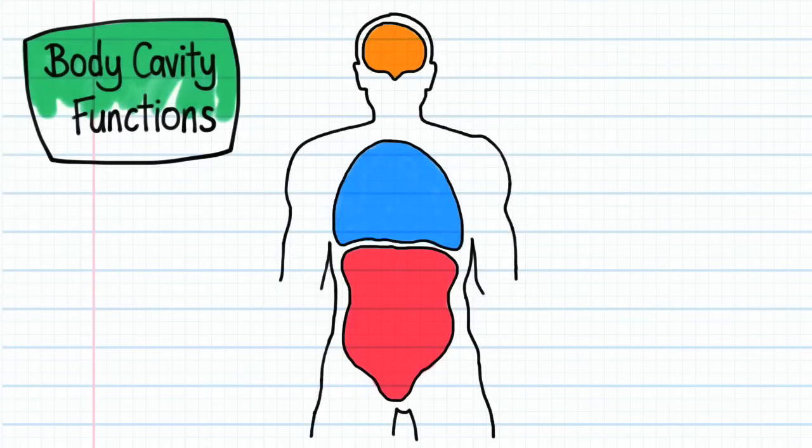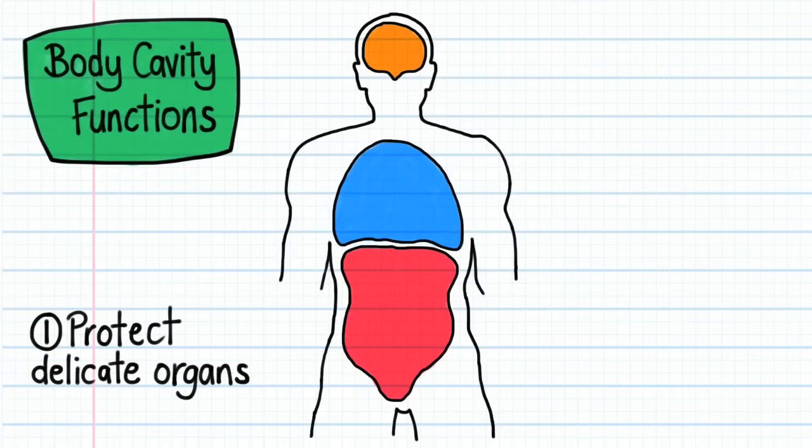Body cavities have several important functions. Firstly, they protect delicate organs, like for example the brain, from bumps and shock when we walk, run, and jump.